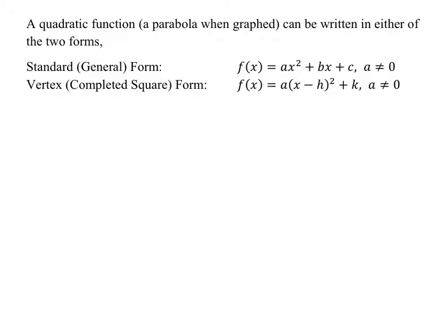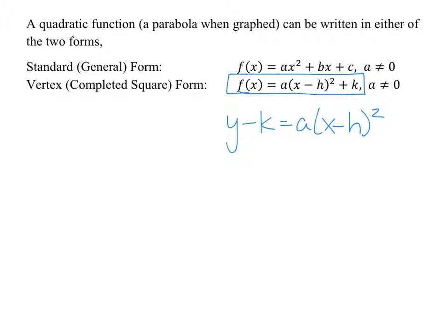And then vertex form. Look at vertex form — it's the same thing as what we had in the previous lesson. We had y minus k equals A times (x minus h) squared. All we did is move the k over. You did this when you were graphing — I gave you a function that said y minus 7, and you added 7 to the right-hand side before you could plug it into Y1 on your calculator. So this is what we call completed square form, or simply vertex form.